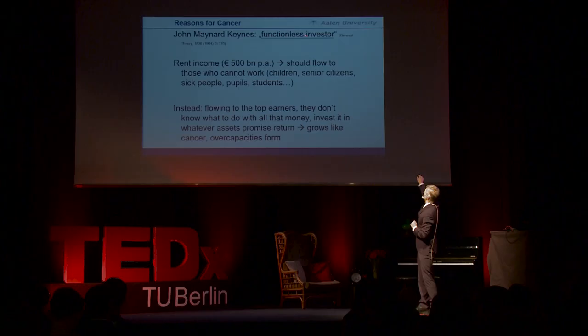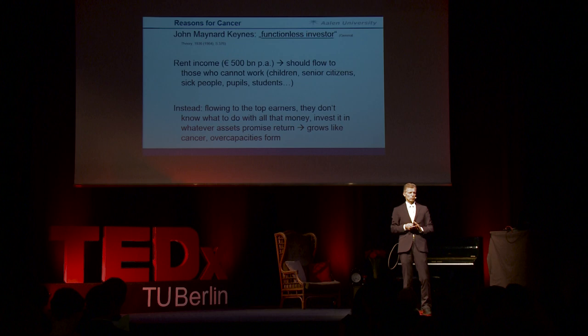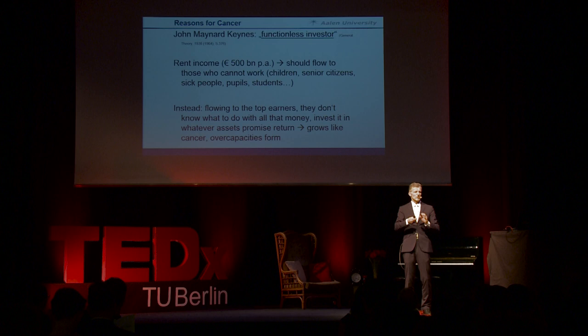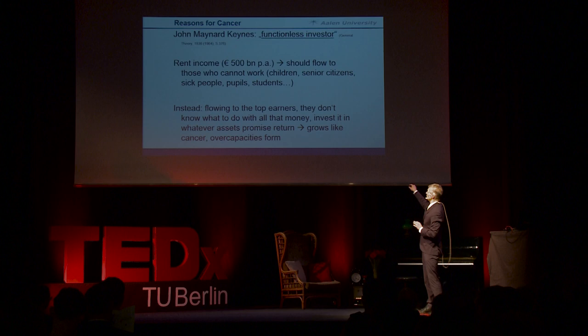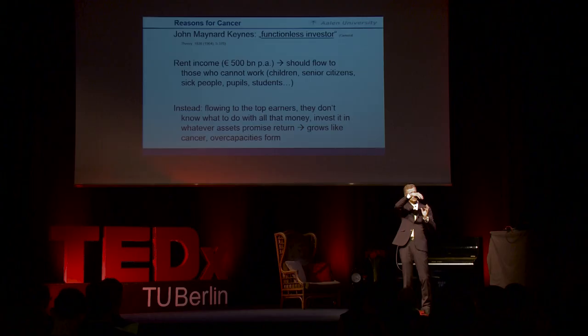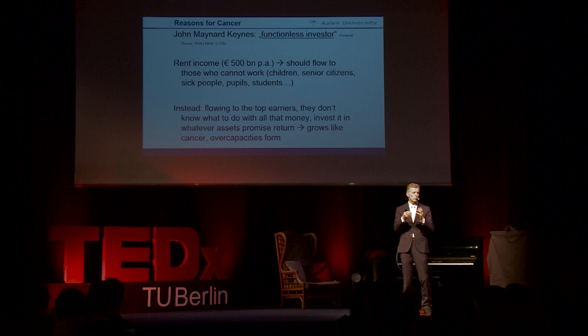John Maynard Keynes, maybe the most famous economist in the world, in 1936 spoke of a so-called functionless investor who has just no function. He said these functionless investors are not only unjust but also bad for the economic process. Let's look at the 500 billion euros rent income in Germany — where should this money flow? It should flow to those who cannot work or cannot afford to work: to our children, students, pupils, or senior citizens. That's where the rent income should flow, and then the economic organism would be sound and could prosper.